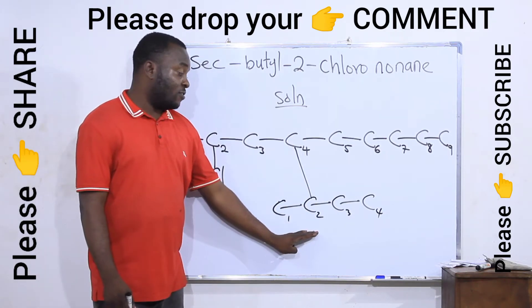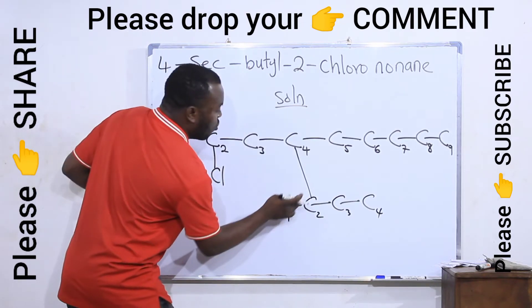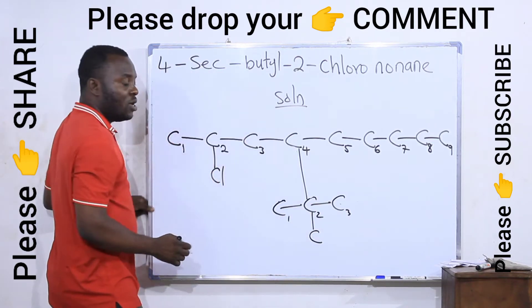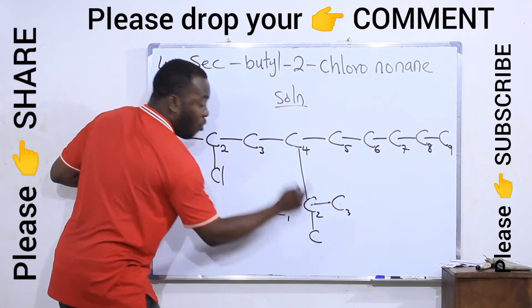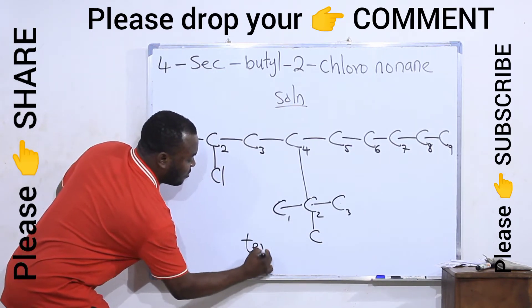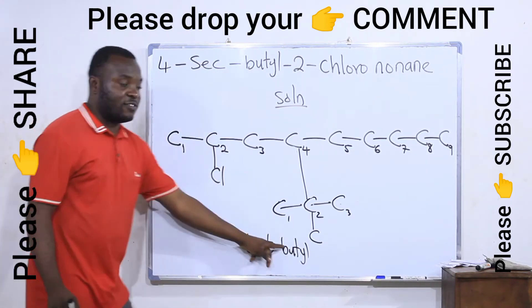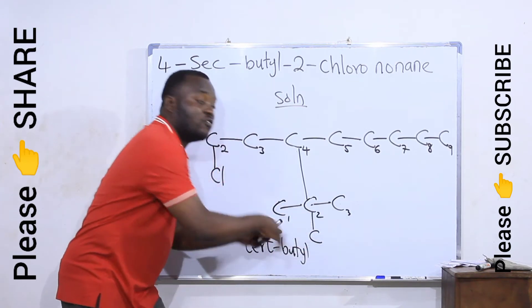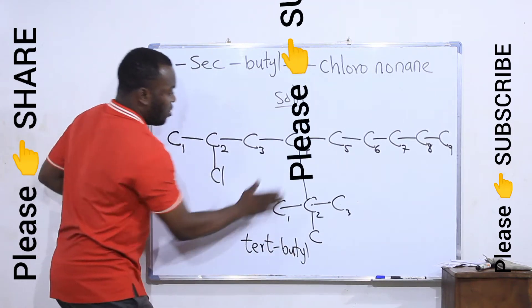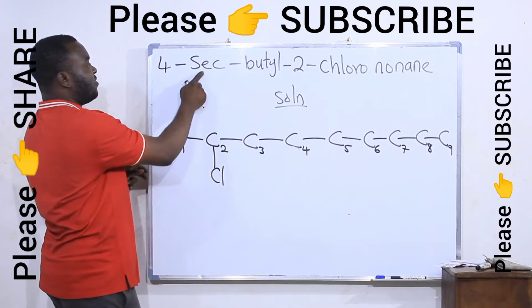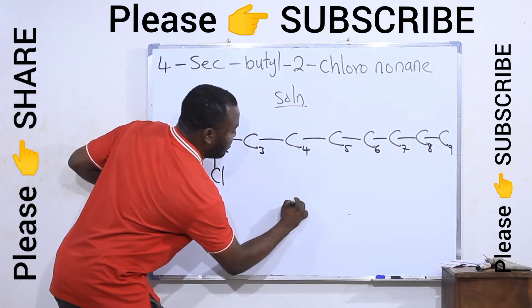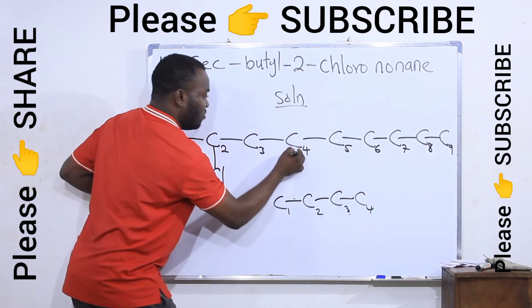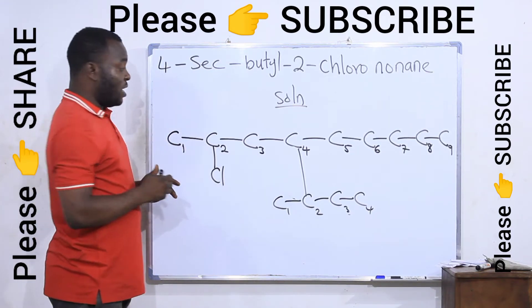But if I connect it from the second carbon, here, this is when I will call it sec-butyl. Now notice if I connect from the second carbon and I still have another attachment on that second carbon. In this case, how many carbons in all? One, two, three, four. Here I will call it tert-butyl, tertiary butyl. That's if it is connected from the second carbon and there is another carbon connected to that same second carbon. Total carbon here is one, two, three, four, which is butyl. So this is tert-butyl. Now back to our problem, what we are asked to attach is sec-butyl, which means from carbon number two. Now this is my sec-butyl: one, two, three, four. I will connect from the second carbon, which is here.